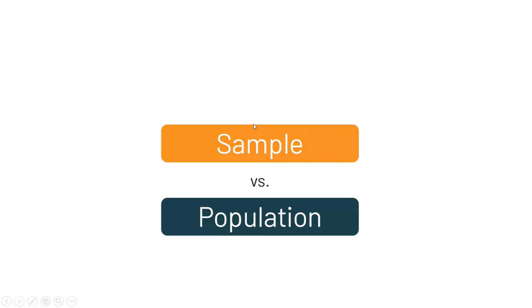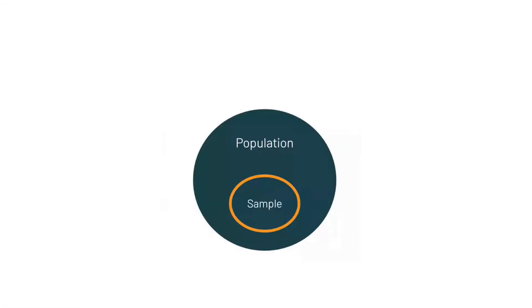So this particular sample and population concept generates a new field in statistics which is called inferential statistics - where we do some statistical operations or observations on sample data and from sample data we try to infer what is the possible measurement for our population.